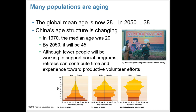Today, populations are aging in many nations, including the United States. The global mean age is now 28, but in 2050, it will be 38. In China, the age structure is also changing. In 1970, the median age was 20, but by 2050, it will be 45. This can obviously mean some problems with fewer individuals in the workforce, but could also have some benefits — there will be older, wiser retirees who can contribute volunteer time and experience toward productive efforts.